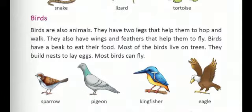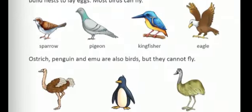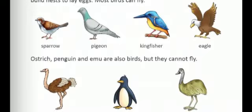Most of the birds live on trees and build nests to lay eggs. Most birds can fly. The common birds are sparrow, pigeon, kingfisher and eagle. These birds can fly because they have a light body, feathers and wings. Ostrich, penguin and emu are also birds but they cannot fly. Because in spite of having wings and feathers, their body is huge and heavy. That is why they can't fly — they can run fast but cannot fly. This is the reason why they are called flightless birds.